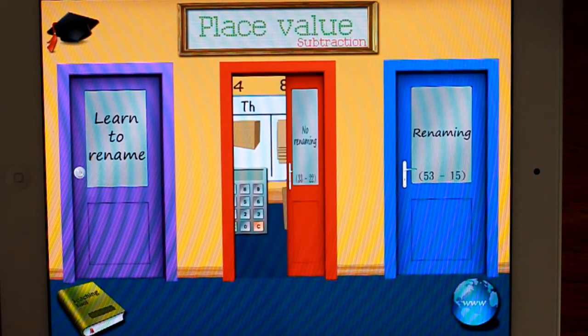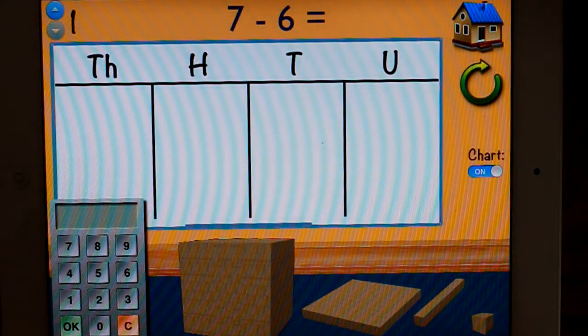Alright, let's have a look at the red door. Alright, so this is only in units. Put the first number on.